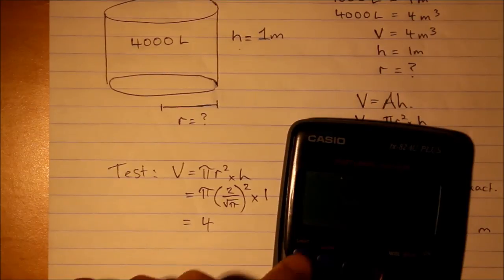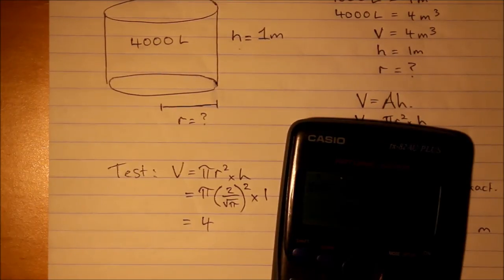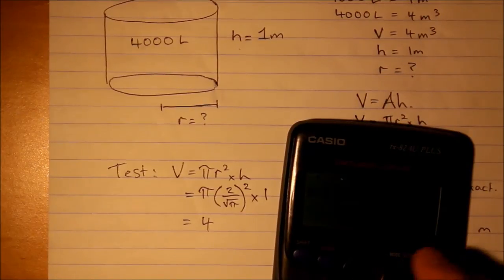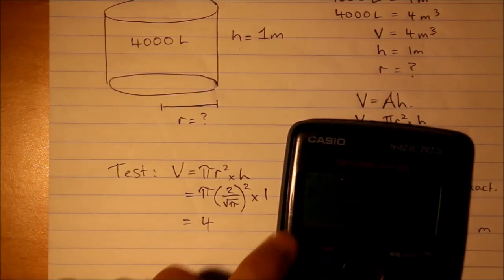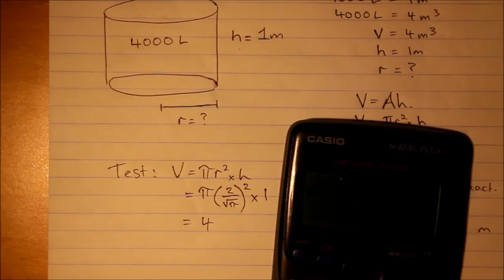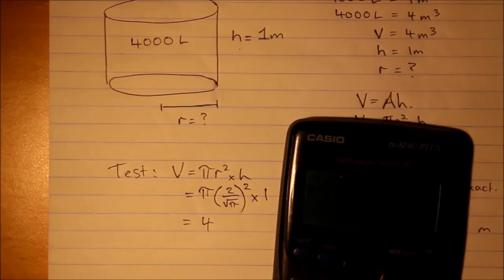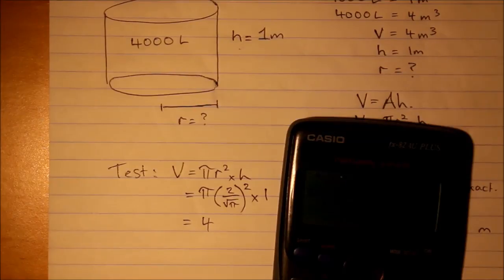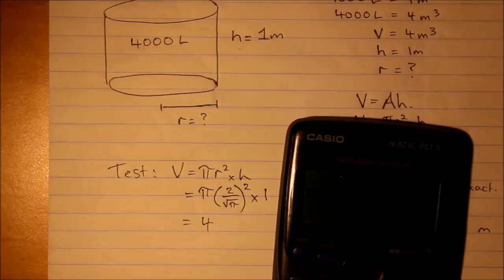So pi times 2 over root pi squared, okay times 1 obviously. And oh I missed something out there. Okay. Phew. You get the right answer.